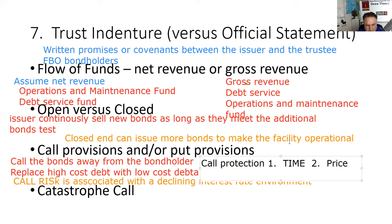If one bond has call protection of five years and another has call protection of seven years, that second bond has better call protection. The longer the time and the higher the call price, the better the call protection. And call risk is associated with declining interest rate environments — you don't have that risk with a zero-coupon bond.